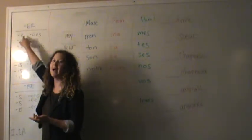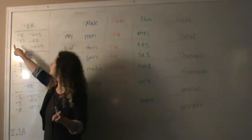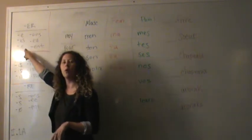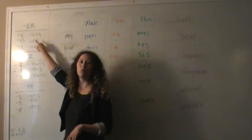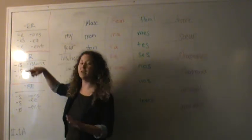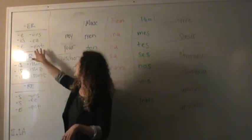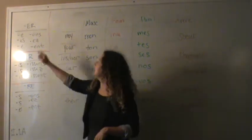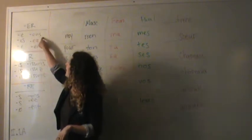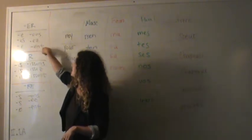For an ER verb, for JE, you're going to take off the ER and add E. For TU, it's ES. For IL and ON, it is E. For NU, it is ONS. For VU, it is EZ. And for IL and L plural, it's ENT. And the song that you remember with this is E-E-S-E-O-N-S-E-Z-E-N-T.